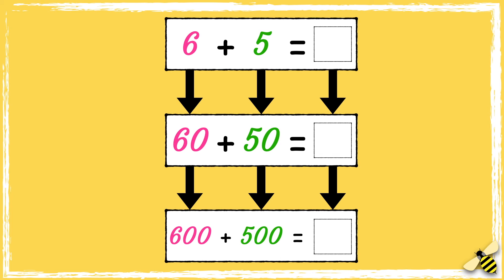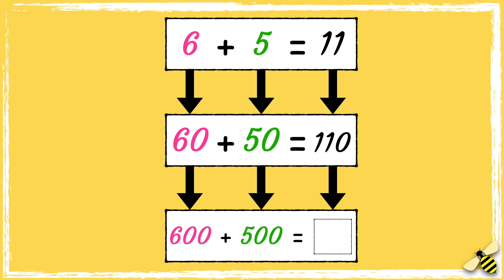Let's see how you got on. So we know that 6 add 5 equals 11, so 60 add 50 equals 110. And 600 add 500 equals 1100.